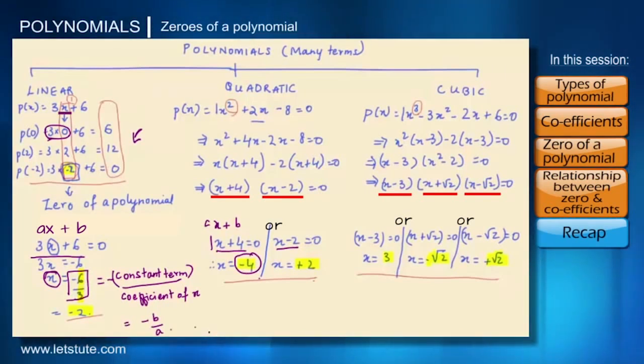But for a linear polynomial, we could have only one zero. But when we have more than one zero for any polynomial, we could have different relations between the zeros and the coefficients and that we will see in the next session.